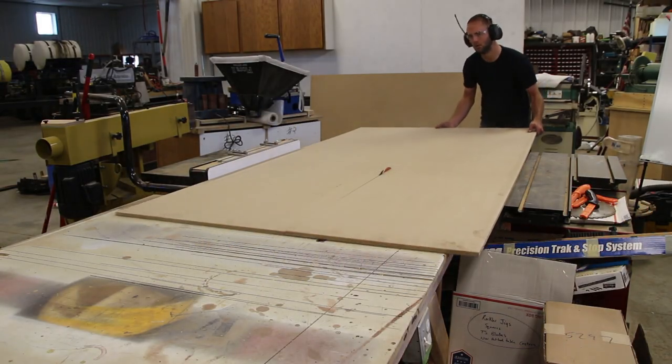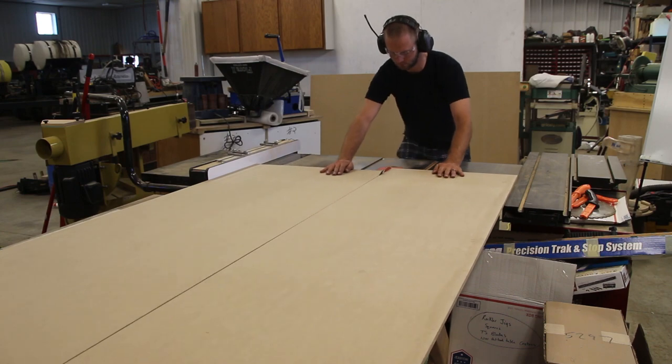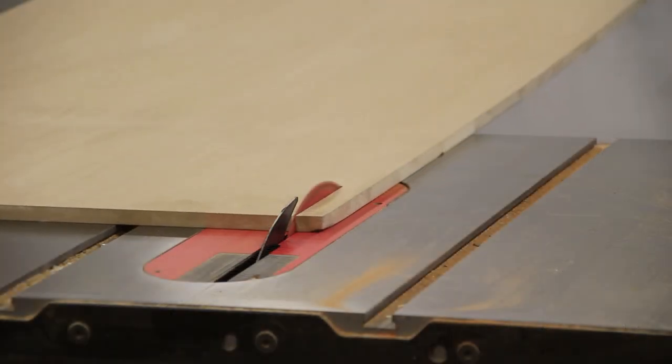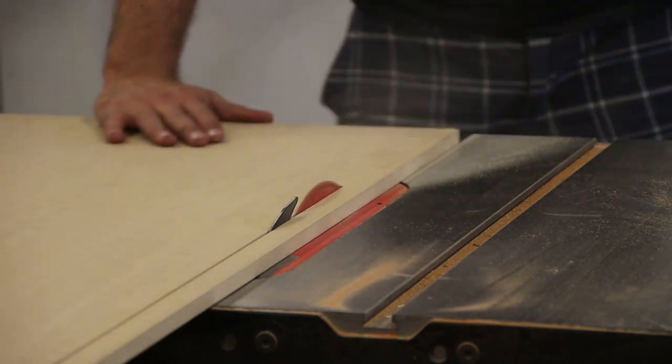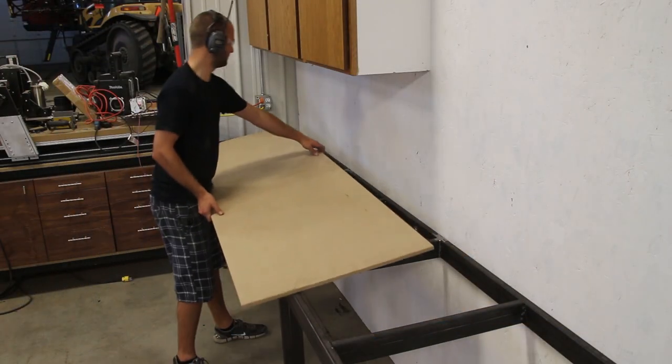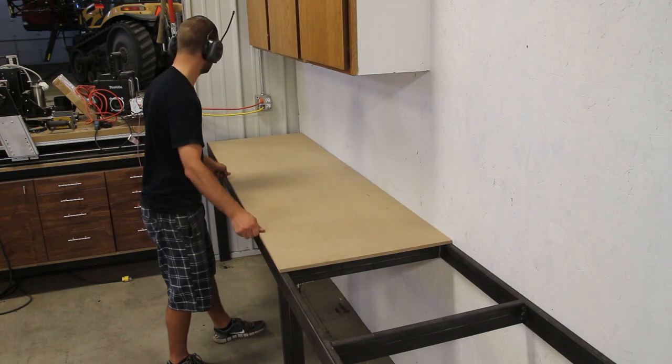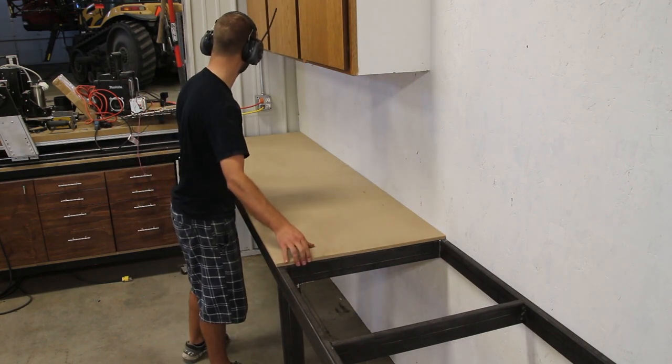Next we can cut the half inch MDF for the top. I set my table saw for the depth of the bench plus one inch. I use the extra inch to flip the piece over and rip off the factory edge in case it is damaged or not true. I cut the length of the top so the mating joint lands in the support. I will secure them down with a few self-tapping screws.